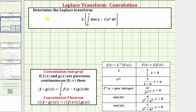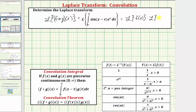Since we recognize this as the Laplace transform of the convolution of f and g, we can determine it by finding the Laplace transform of f(x) times the Laplace transform of g(x). Looking at the form of the integral, f(x) equals sine x and g(x) equals e raised to the power of x.